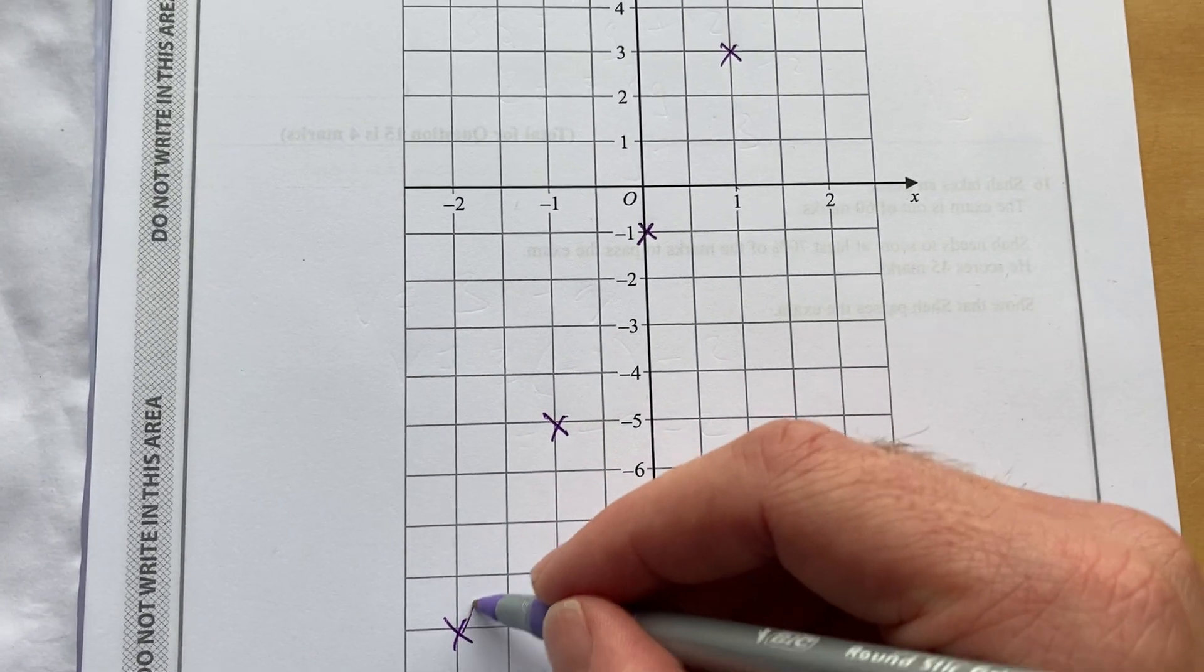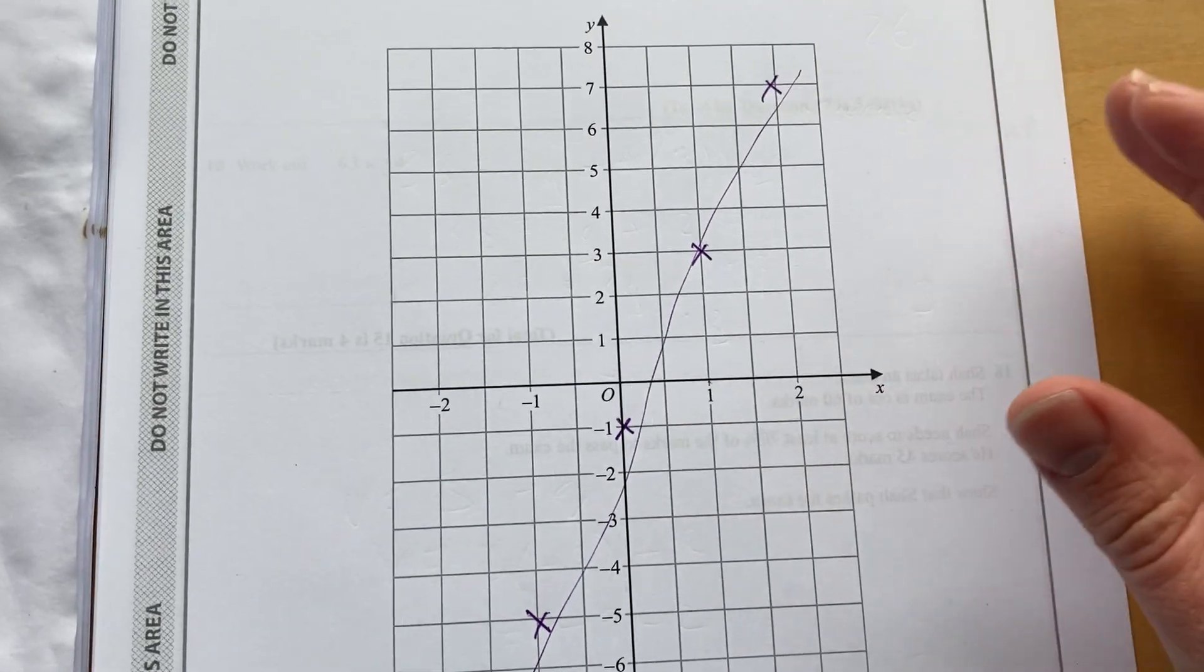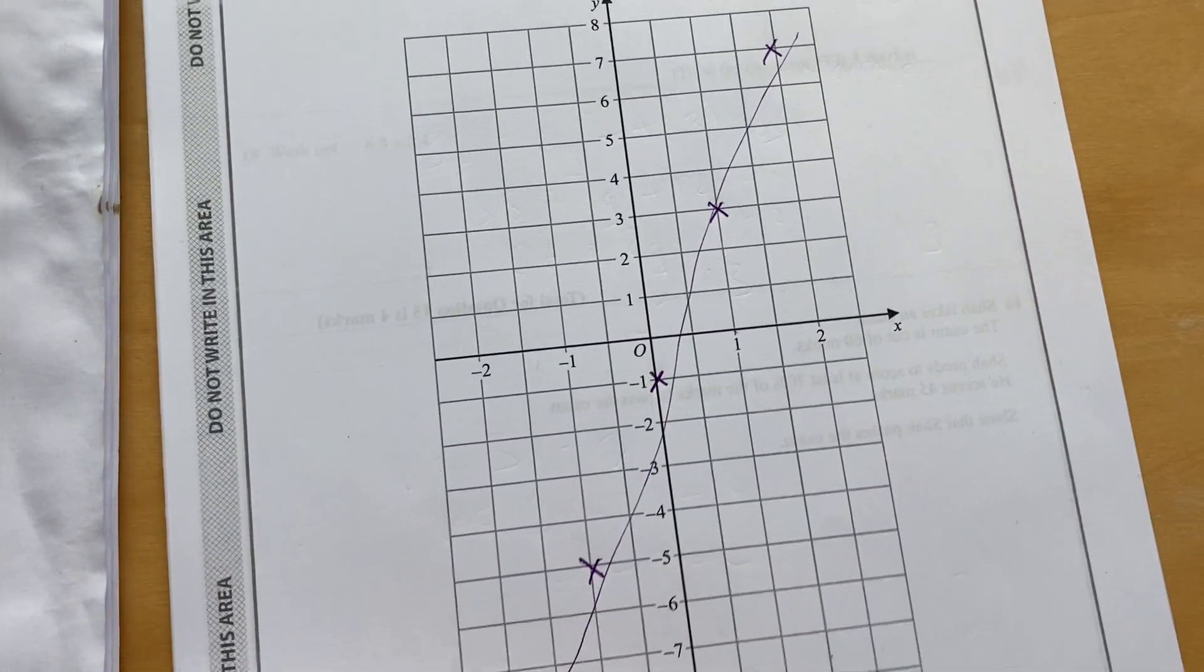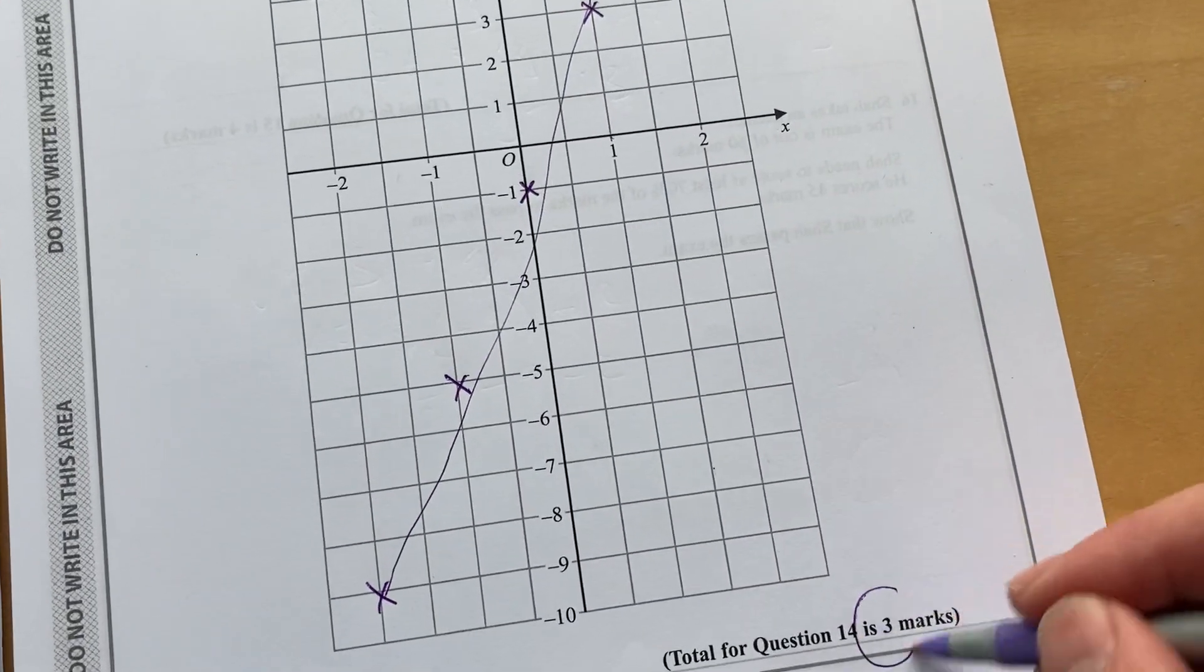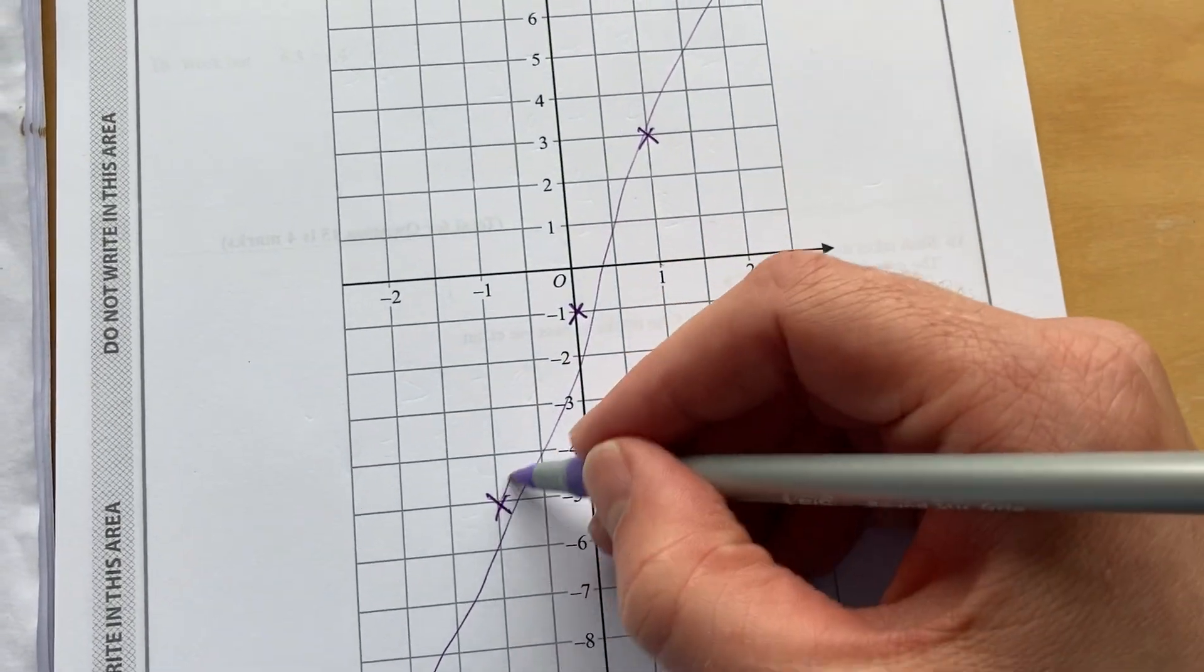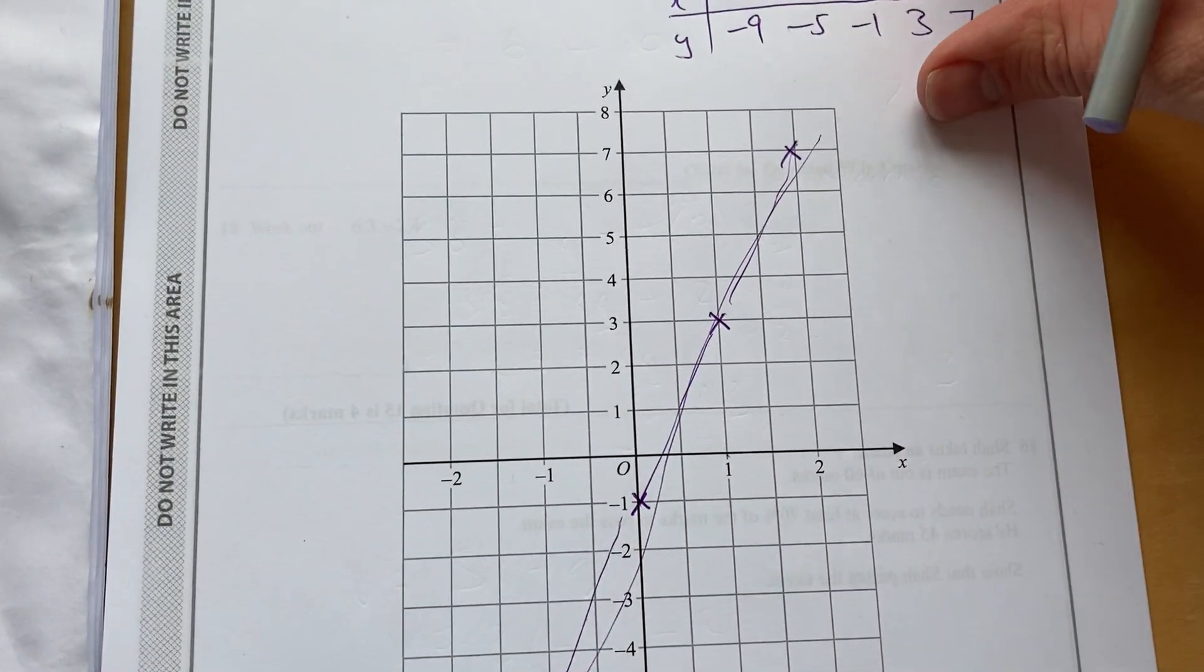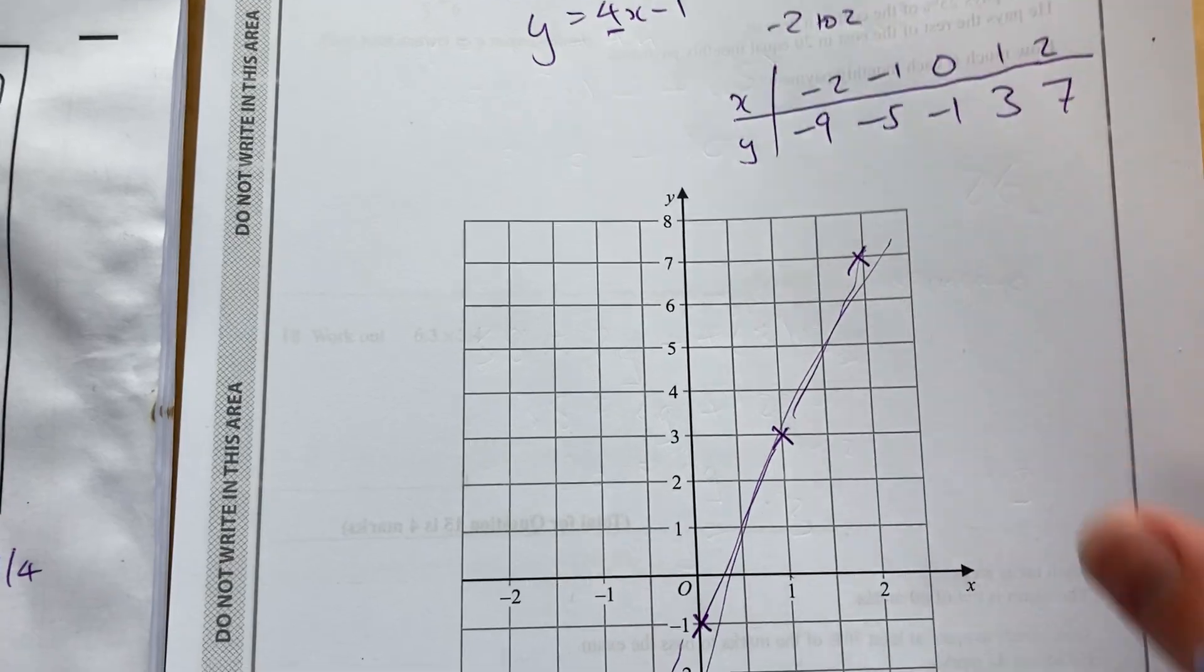And then using a ruler, better than mine, get a straight line there. Because I'm doing that with one hand. Okay, that'll give you a nice 3 marks there. If you've got a nice straight line there, then you would get that. Okay, but the most important thing is get those values correct so you can plot it.